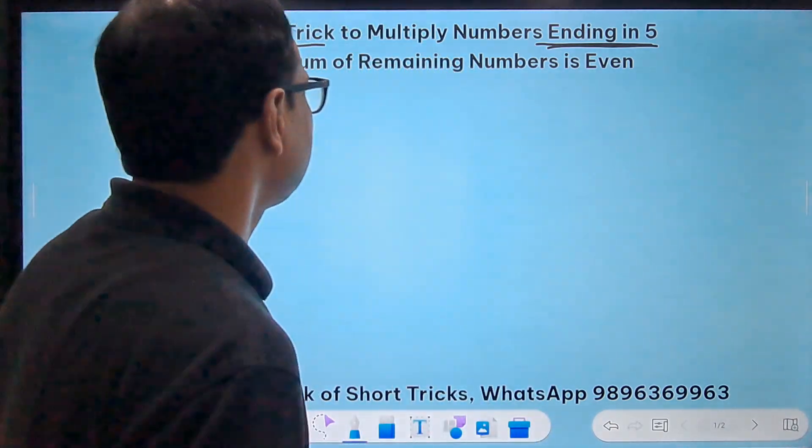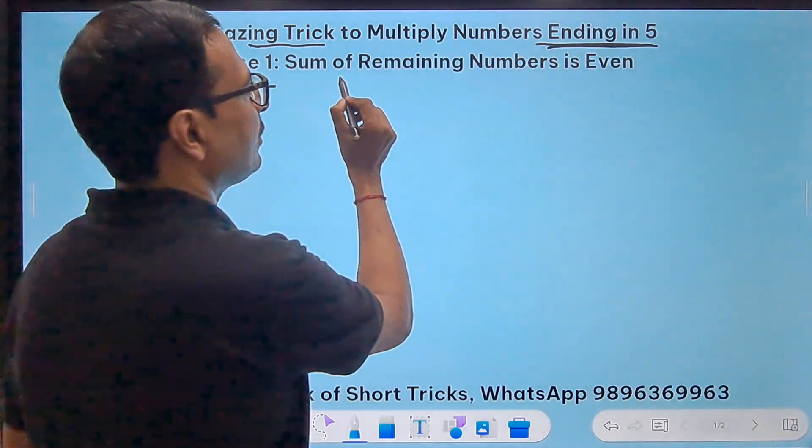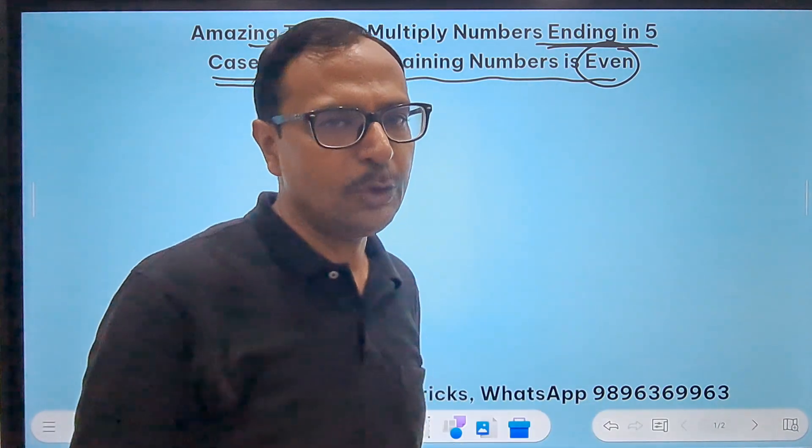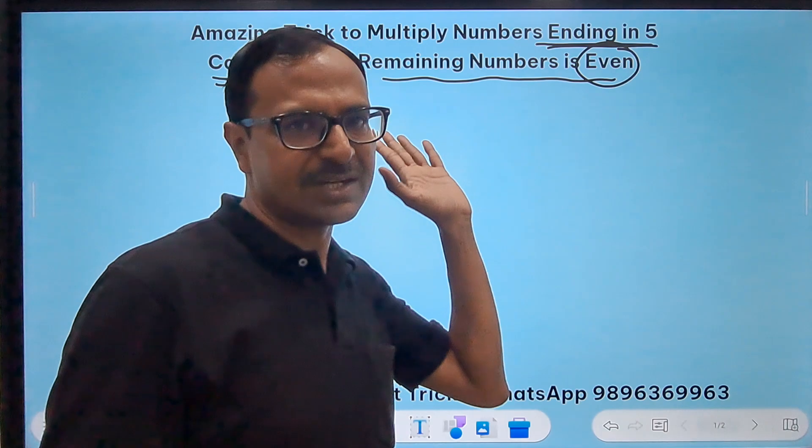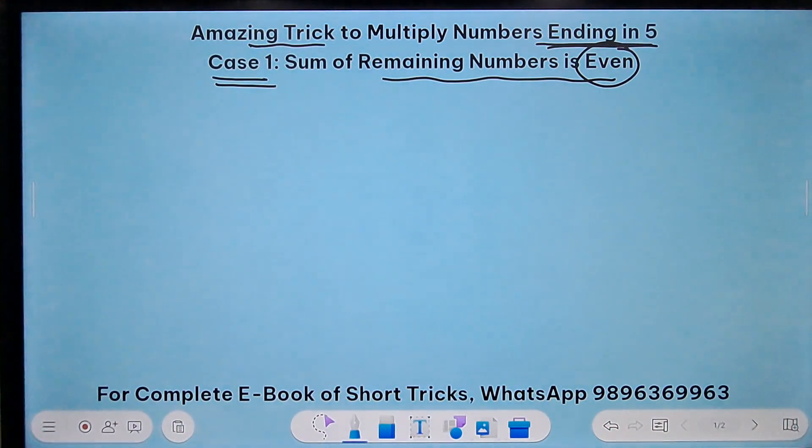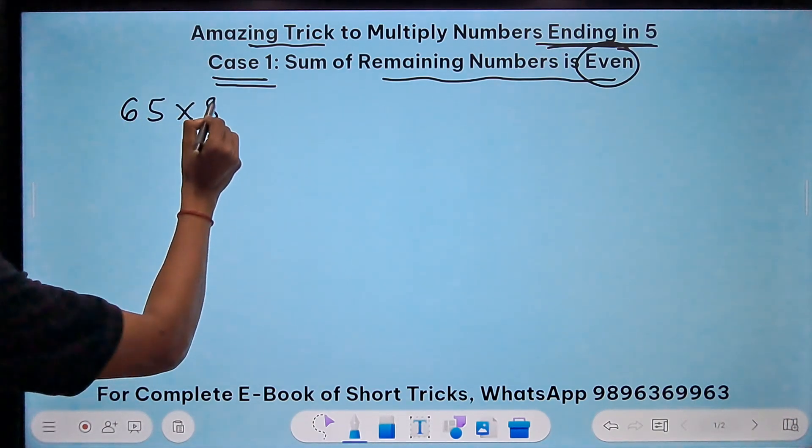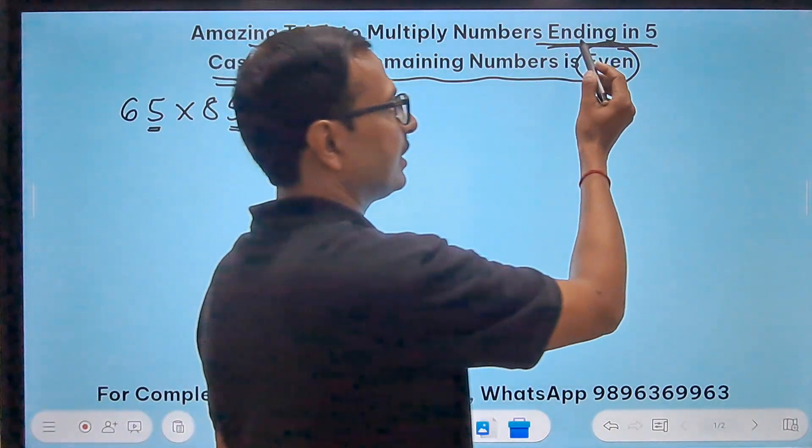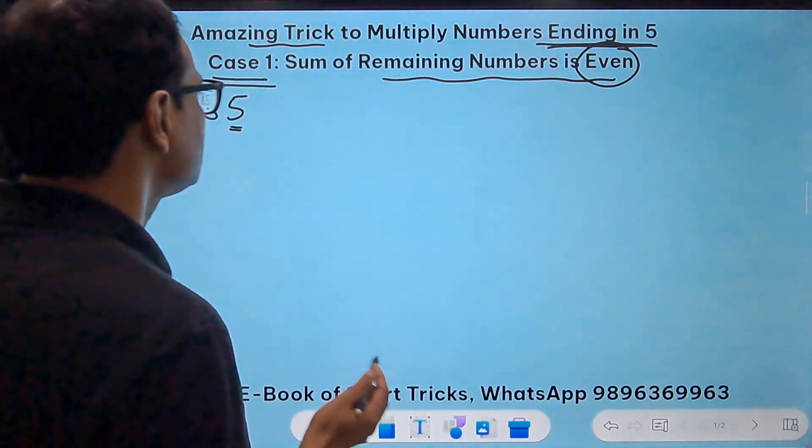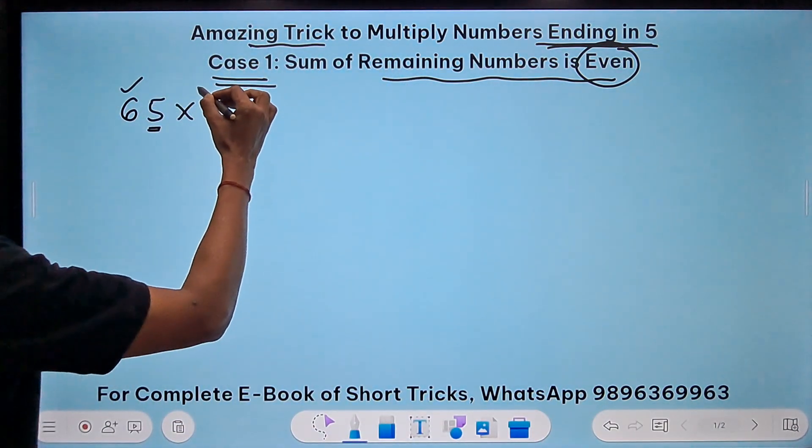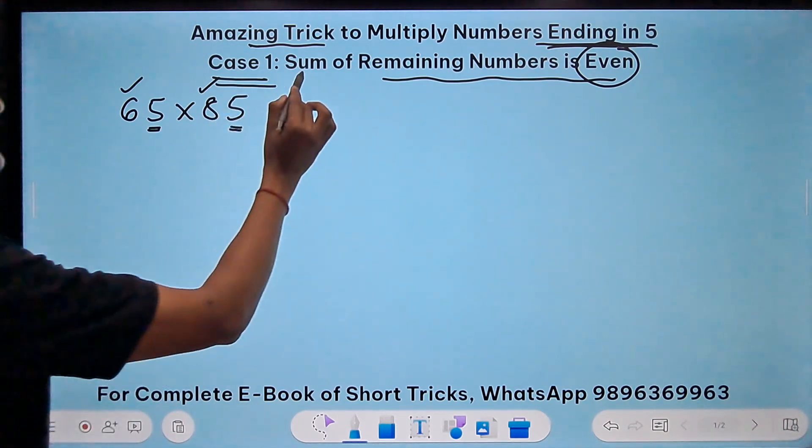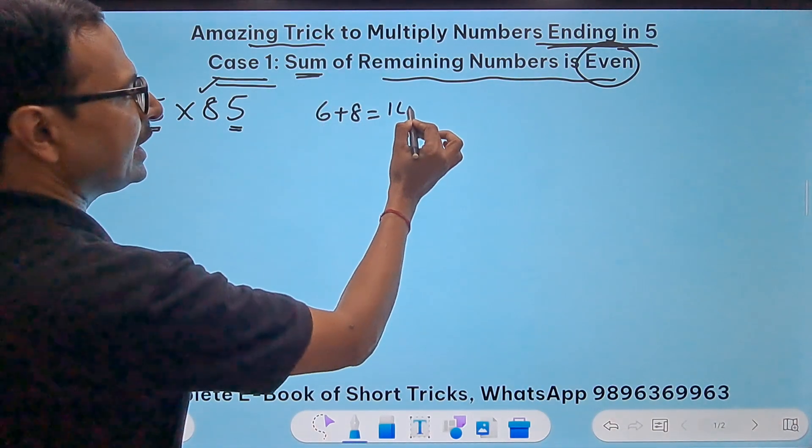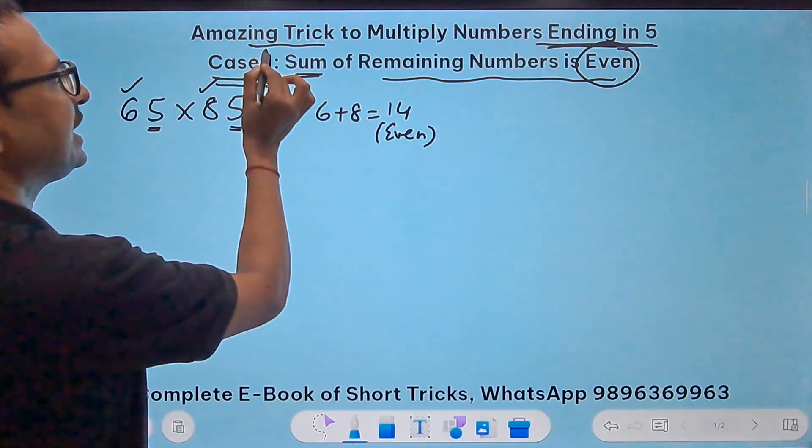Let's see the first case where the sum of remaining numbers is even. I'll take an example of 65 times 85. If we eliminate the 5's, the remaining number is 6 and remaining number is 8. The sum 6 plus 8 is 14 and this 14 is even. This is case 1.